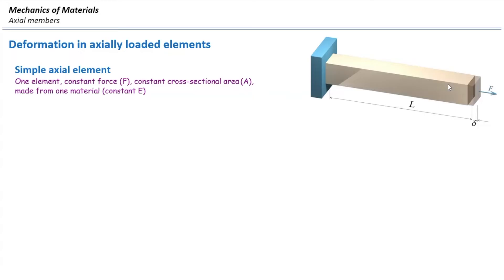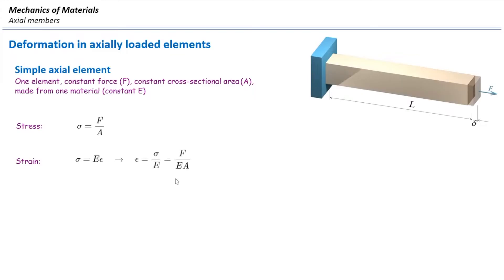In order to determine the deformation, we are going to start with the definition of stress. Stress is simply force divided by the cross-section area. Then we are going to use the relationship between stress and strain, or Hooke's law. Stress is modulus of elasticity E multiplied by strain epsilon. I can solve that for epsilon: epsilon is sigma divided by E. Then I'm going to plug in the value of stress from the first equation into this equation.